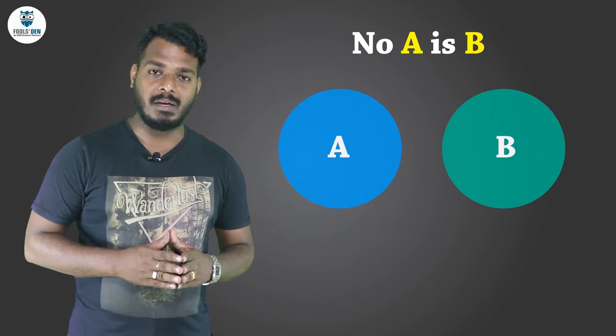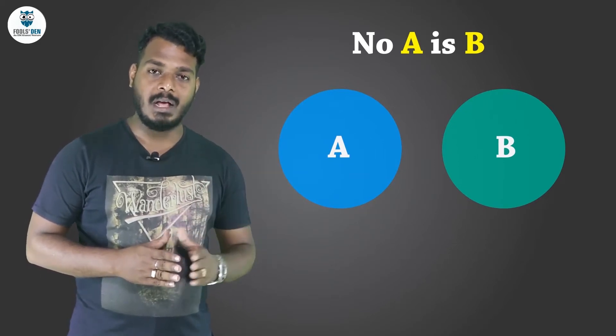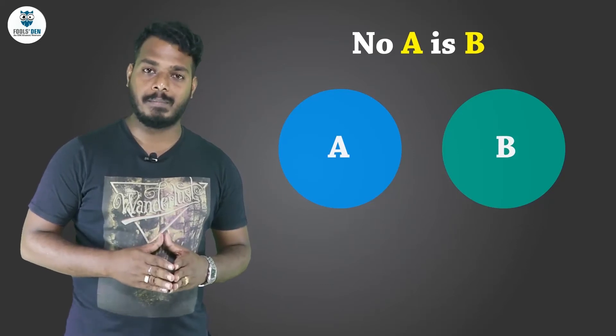Next concept: if I say no A is B, it will be represented something like this. Here we have two distinct circles, that of A and B, with no common area between them.